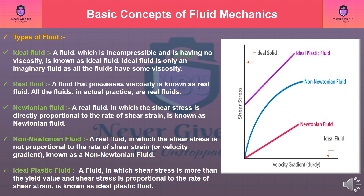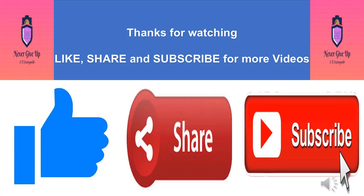Newtonian Fluid: a real fluid in which the shear stress is directly proportional to the rate of shear strain is known as a Newtonian Fluid. Non-Newtonian Fluid: a real fluid in which the shear stress is not proportional to the rate of shear strain, or velocity gradient, is known as a Non-Newtonian Fluid. Ideal Plastic Fluid: a fluid in which shear stress is more than the yield value and shear stress is proportional to the rate of shear strain is known as an ideal plastic fluid.